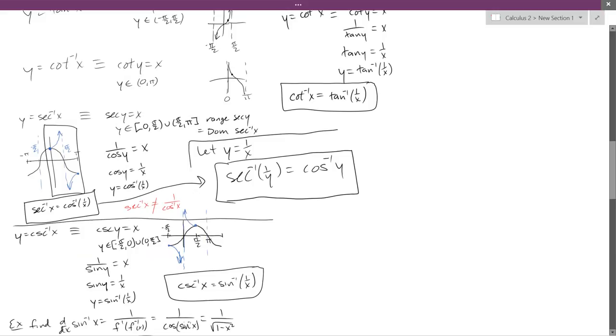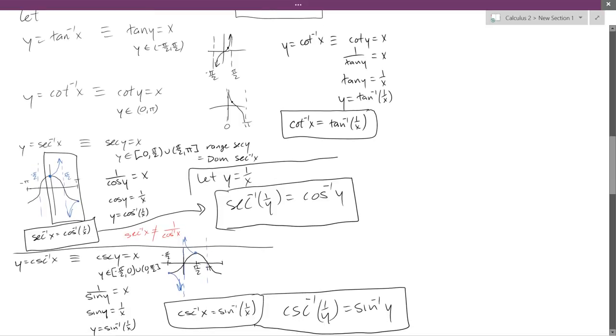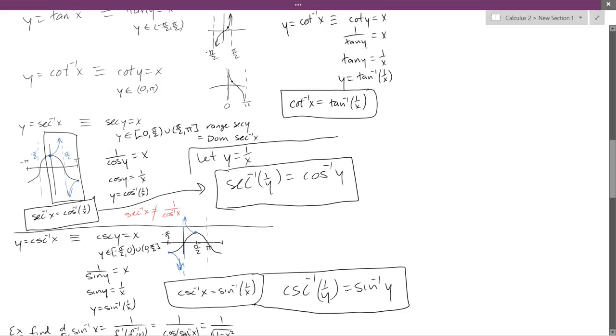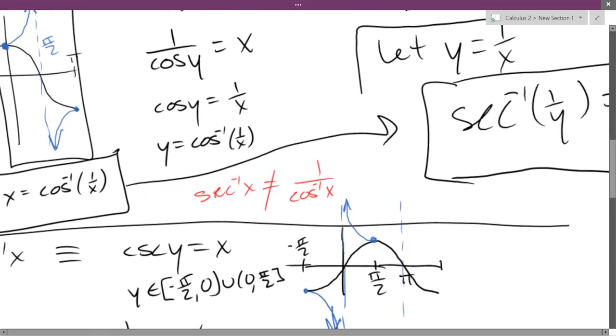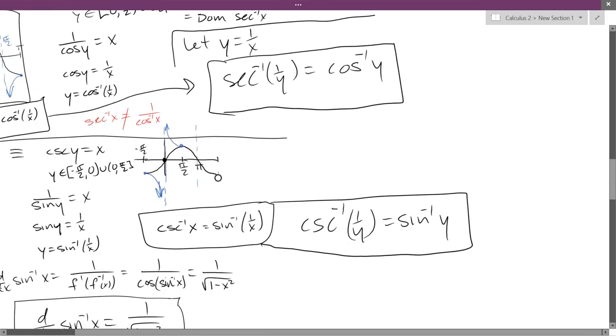We'll do the same thing down here with cosecant and sine. So we're going to get cosecant inverse 1 over y equals sine inverse y. Now you should be worried, what about when y equals 0? Obviously 1 over 0 is not going to work out very well. Here's where sine of 0 is 0 would correspond to where cosecant is undefined. So you shouldn't be using these at all when you have 0 in for x or y.